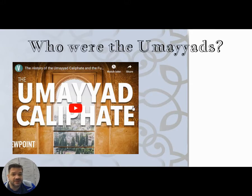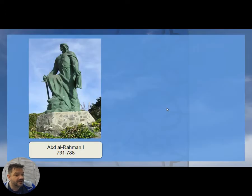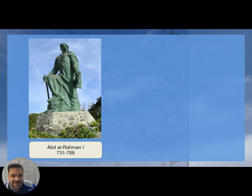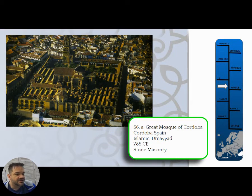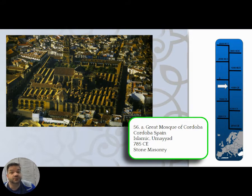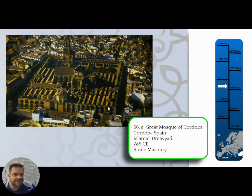This is the prince Abdul al-Rahman, and there's a statue of him in Spain today. He flees from Syria after his family is decimated by the Abbasid Caliphate and comes to Cordoba. On a hill there — where there had been an ancient Roman temple and then a Christian church — he builds a mosque. Over the years it gets enlarged repeatedly.